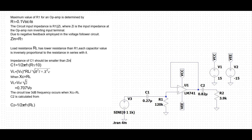The impedance of C1 should be smaller than Zn. The circuit output voltage V0 is divided across capacitor C2 and the load resistance RL. The circuit low 3dB frequency F1 occurs when the capacitor impedance equals the load resistance. We can then calculate C2 as equal to 1 divided by 2π times F1 times RL.